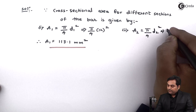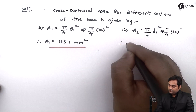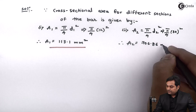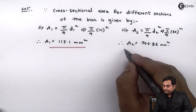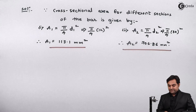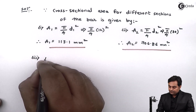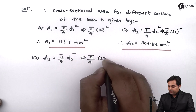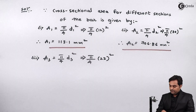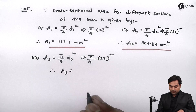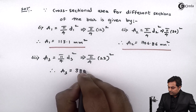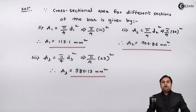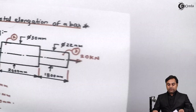Similarly, A2 = (π/4) × d2² where d2 = 30. Therefore A2 = 706.86 mm². Next, A3 = (π/4) × d3² where d3 = 22. Therefore A3 = 380.13 mm².